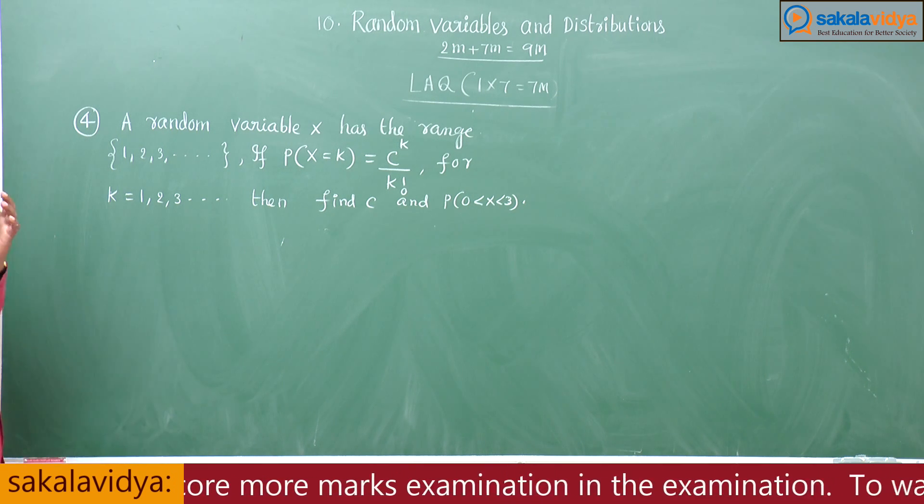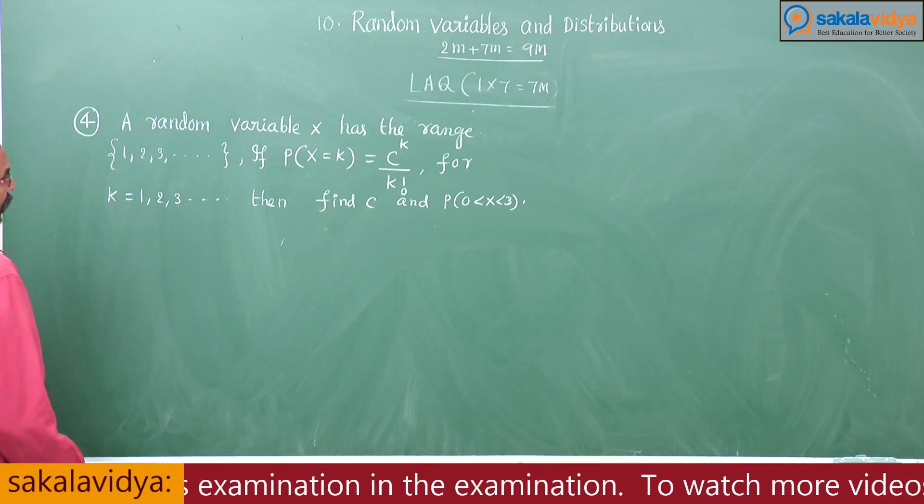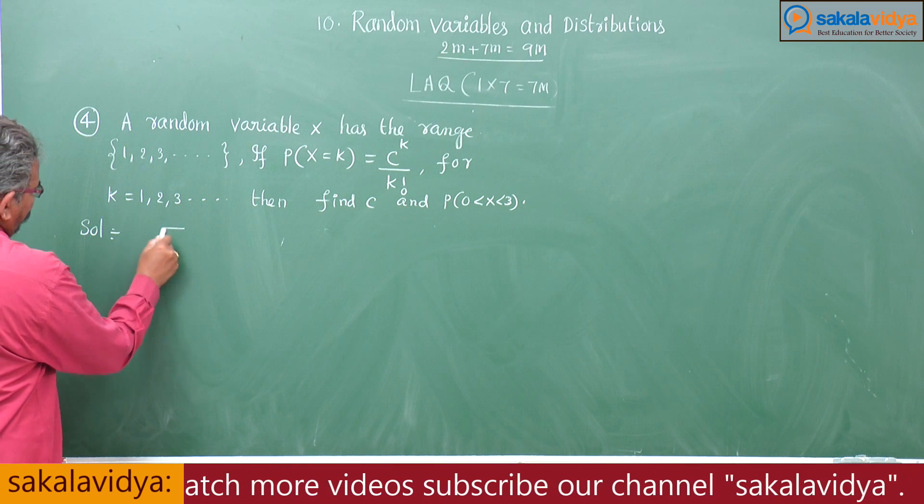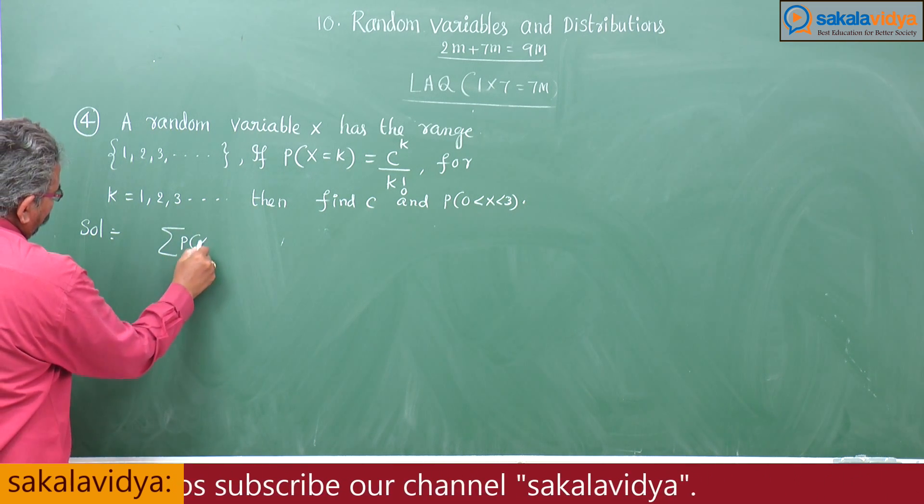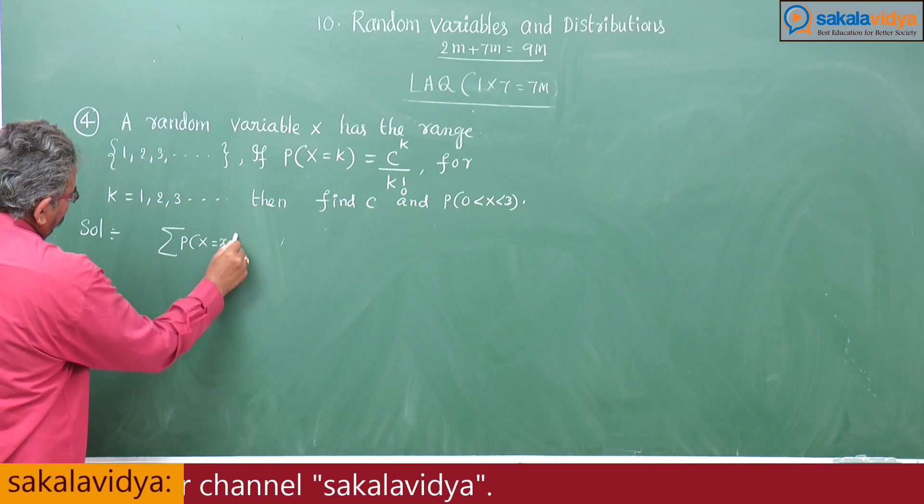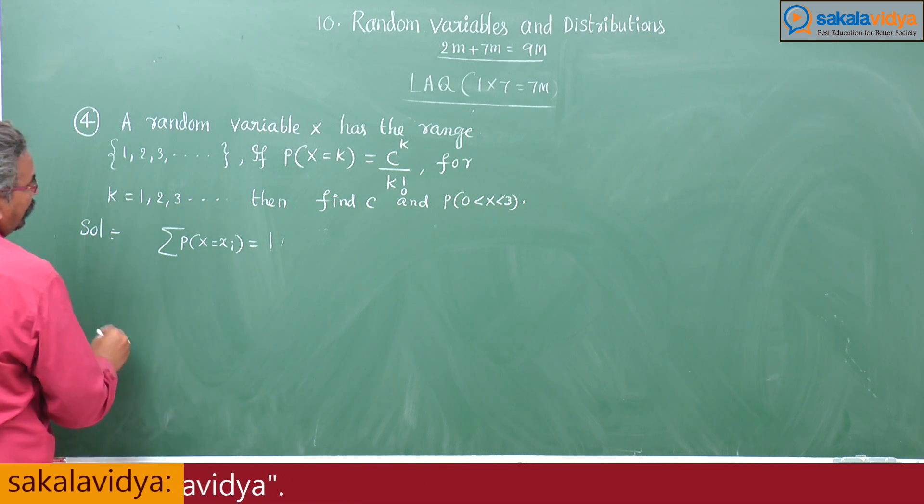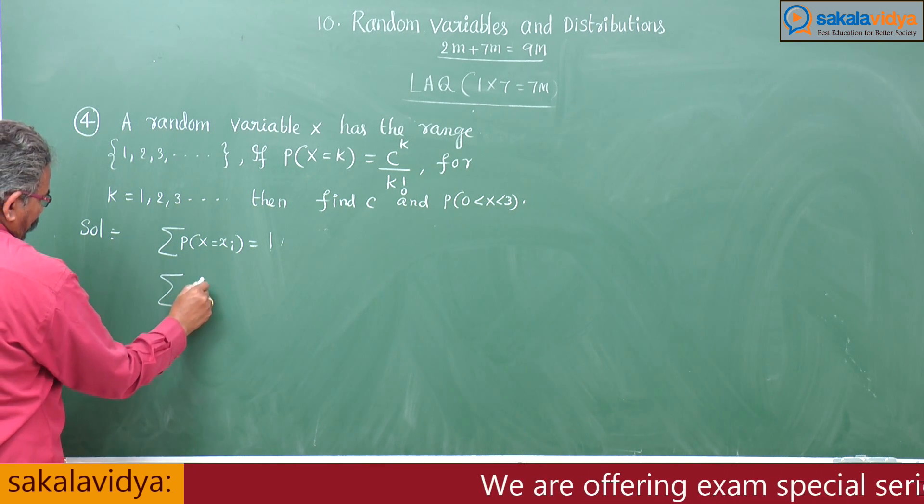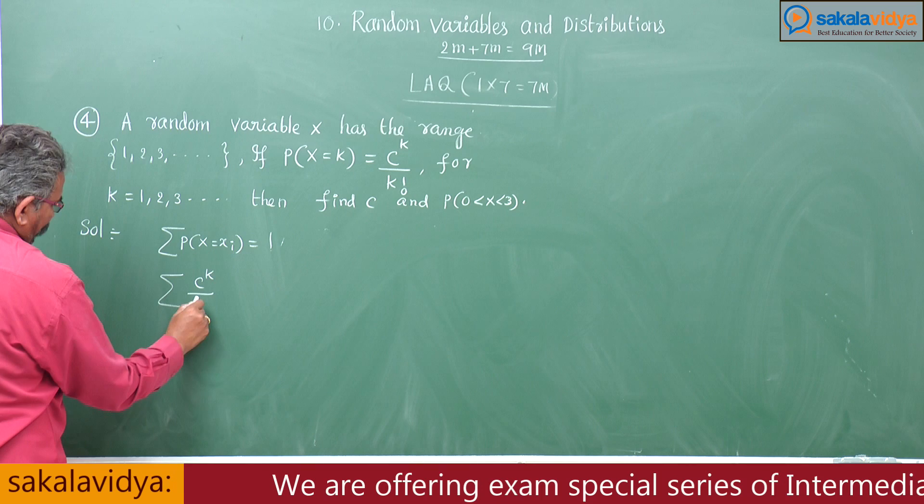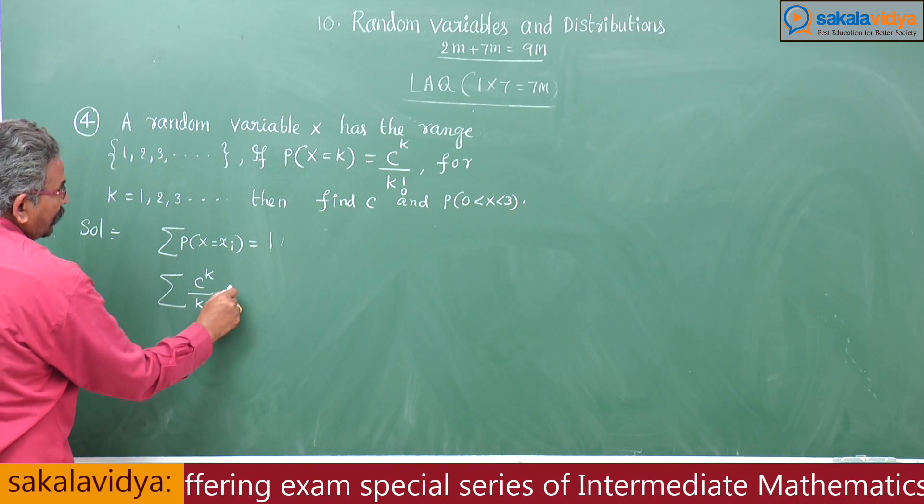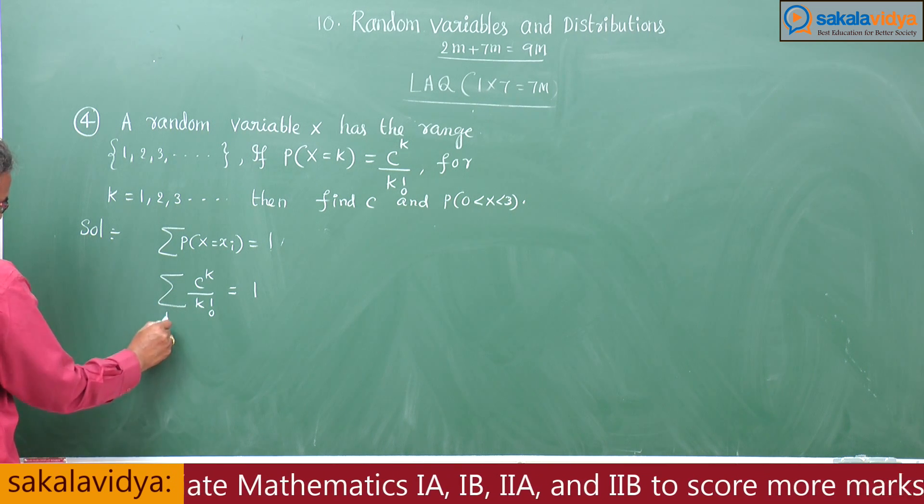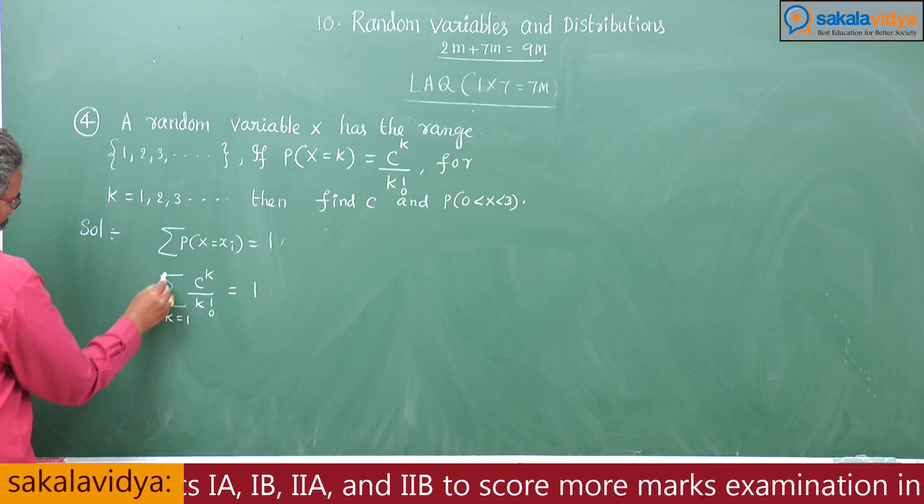So, in order to find out c first, sum of the probabilities sigma p of x is equal to x_i is equal to 1. That means, here sigma c power k by k factorial is equal to 1.